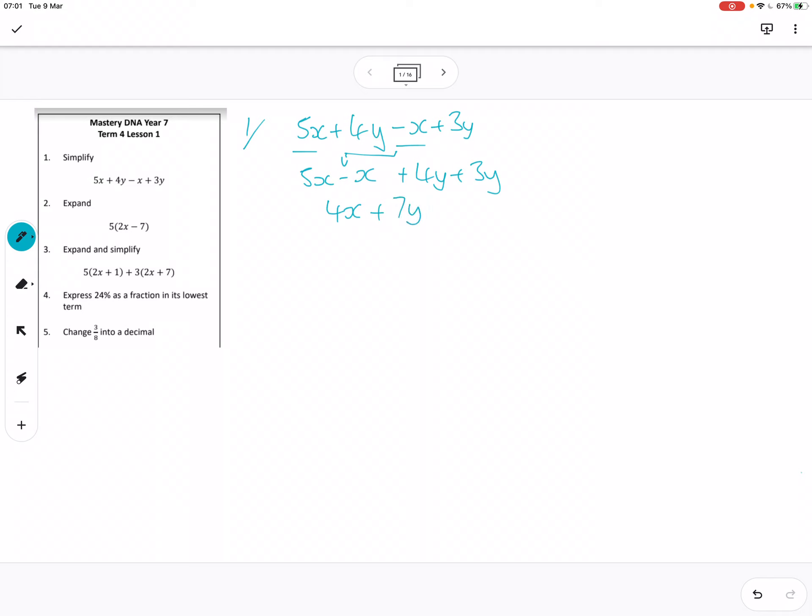Question 2: expand 5(2x - 7). So when we expand brackets, we take the outside term and multiply it by both of the terms on the inside. So 5 times 2x is 10x, minus, and then positive 5 times negative 7 is negative 35. That's basically that one. You just got to know how to do that, we did that earlier this term.